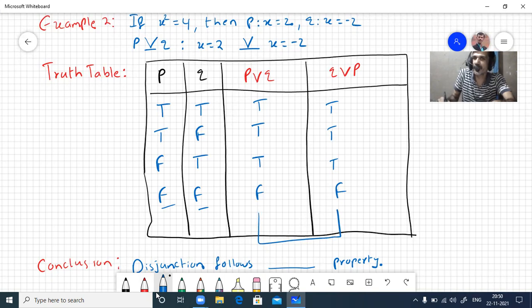Then what can you say? These two are equivalent. Which two are equivalent? P or q is equivalent to q or p. What property is this? Disjunction follows nothing but the commutative property. In the next video we'll discuss conjunctions. Thanks for watching.